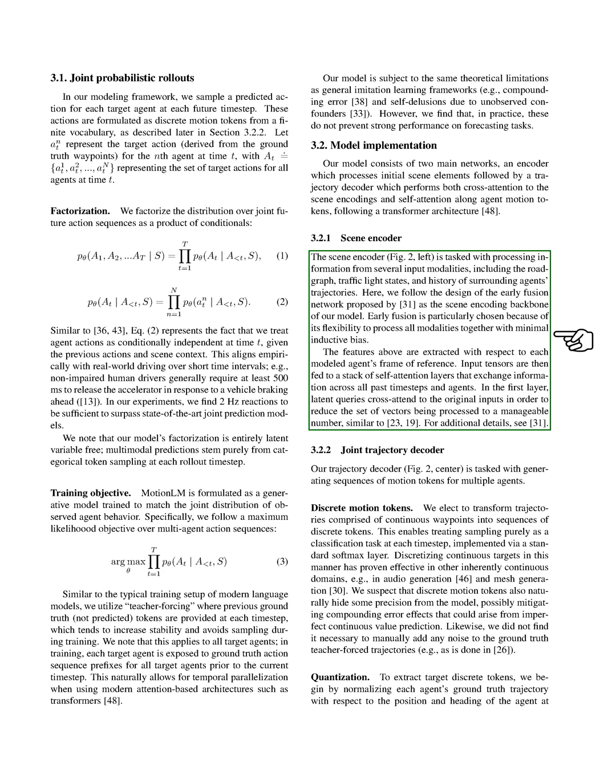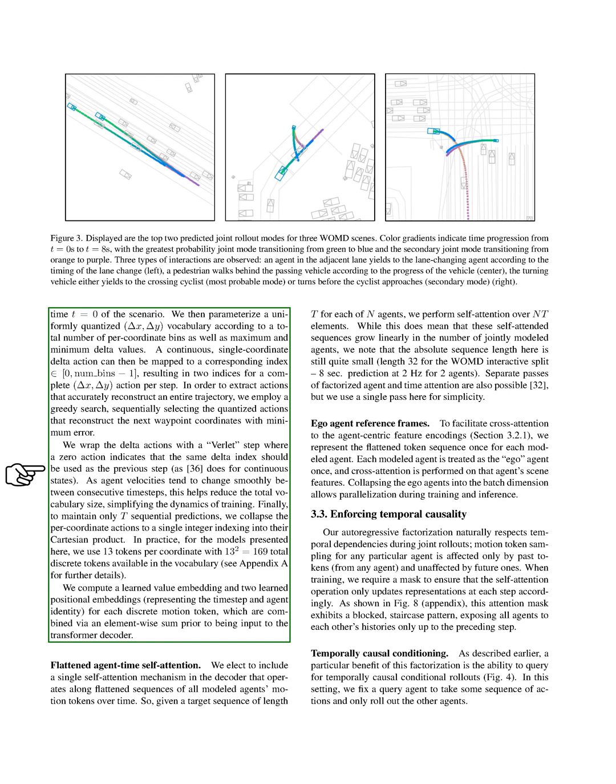Our trajectory decoder generates sequences of motion tokens for multiple agents. We transform continuous waypoints into sequences of discrete tokens. This allows us to treat sampling as a classification task at each time step. We've found that discretizing continuous targets in this way is effective in other continuous domains, such as audio and mesh generation. To extract target discrete tokens, we normalize each agent's trajectory with respect to the position and heading of the agent at the start of the scenario. We then parameterize a uniformly quantized vocabulary according to a total number of per-coordinate bins as well as maximum and minimum delta values. A continuous, single-coordinate delta action can then be mapped to a corresponding index, resulting in two indices for a complete action per step. We use a greedy search to extract actions that accurately reconstruct an entire trajectory. We also use a verlet step where a zero action indicates that the same delta index should be used as the previous step. This helps reduce the total vocabulary size, simplifying the dynamics of training.